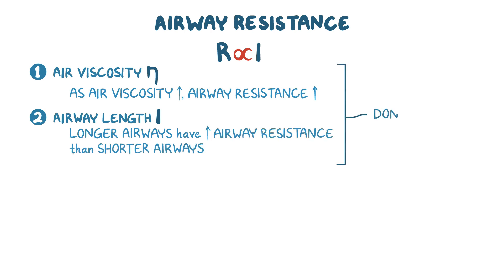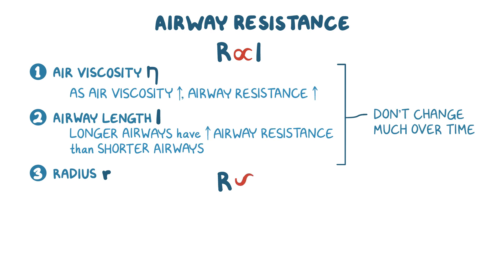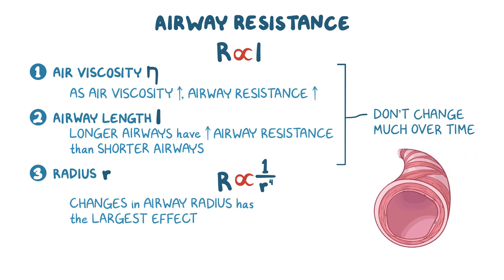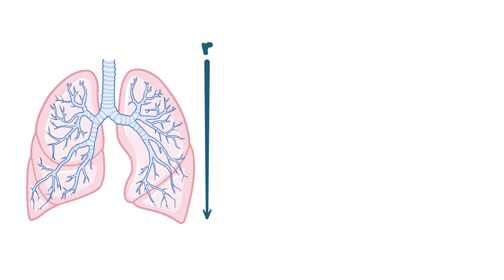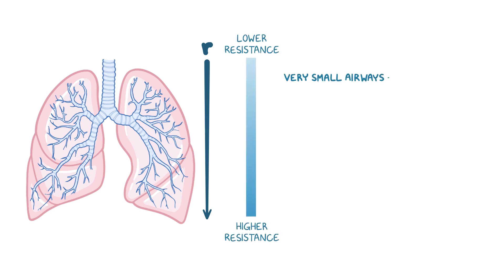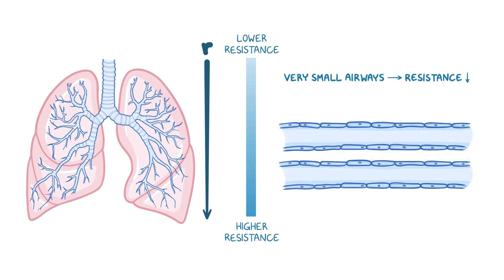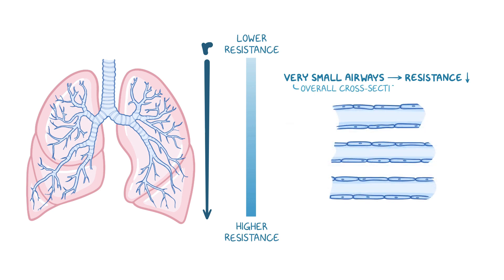Both air viscosity and airway length don't change much over time, so they don't contribute much to changes in airway resistance in real life. The third factor is airway radius, represented by the small letter r. The relationship is inversely proportional, and the radius is raised to the power of 4, meaning changes in airway radius have the largest effect on airway resistance. Moving from the trachea down the bronchial tree, as radius decreases, resistance increases. However, when reaching the very small airways, resistance surprisingly goes down — in fact, it's the lowest in the whole bronchial tree. This is because these small airways branch many times and arrange in parallel, increasing the overall cross-sectional area, so overall resistance is actually lowest in the respiratory tract.